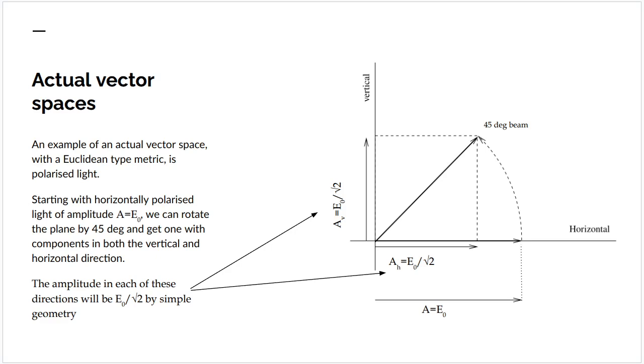Suppose we start out with a horizontally polarized beam of light. All its amplitude, which we'll write, the amplitude is E0. All the amplitude is in the horizontal component of the wave.